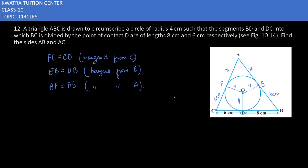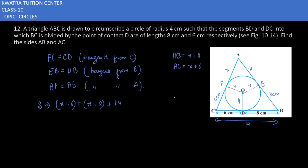We have to find the value of x. So AB will be x plus 8 and AC will be x plus 6 centimeters. The third side BC is 14 centimeters. Now we need to find the semi-perimeter using the sides: x plus 6, x plus 8, and 14.